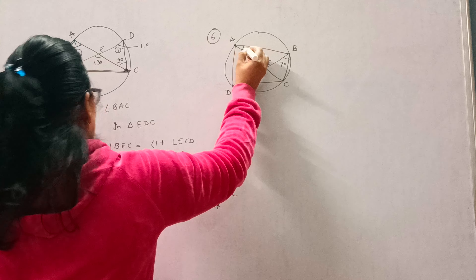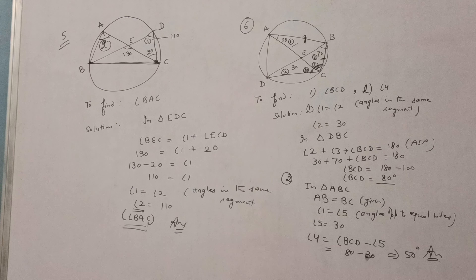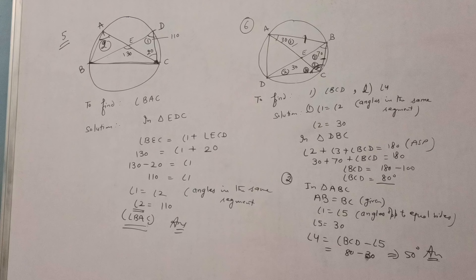In triangle ABC, since AB equals BC, the angles opposite to the equal sides are also equal, so angle 1 equals angle 5. Since angle 1 is 30 degrees, angle 5 is also 30 degrees. Now, angle BCD is 80 degrees and angle 5 is 30 degrees, so angle 4 equals BCD minus angle 5, which is 80 minus 30 equals 50 degrees. Therefore angle ECD is 50 degrees.